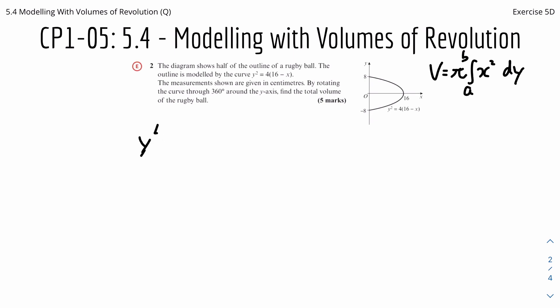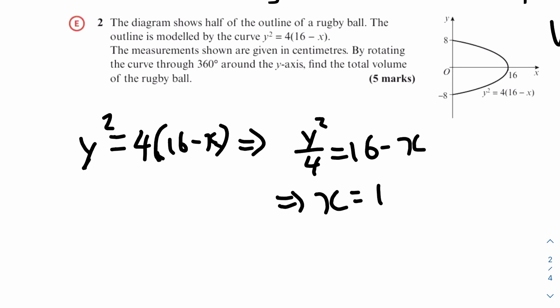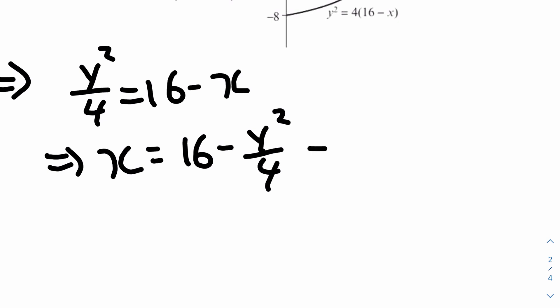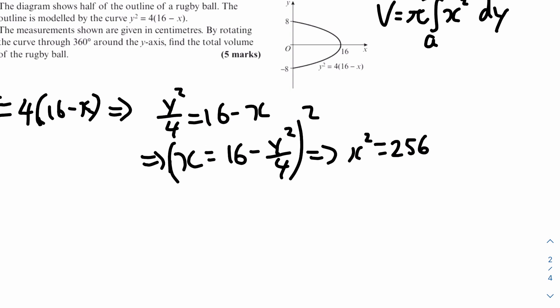We know that y squared equals 4 times 16 minus x. Rearranging for x: y squared over 4 equals 16 minus x, so x equals 16 minus y squared over 4. To find x squared we square both sides: x squared equals 256 minus 8y squared plus y to the power of 4 over 16.